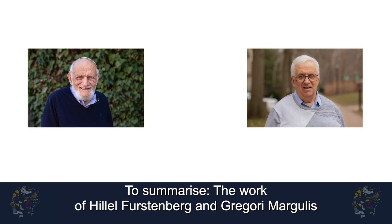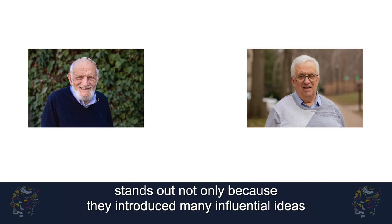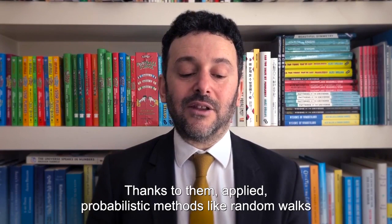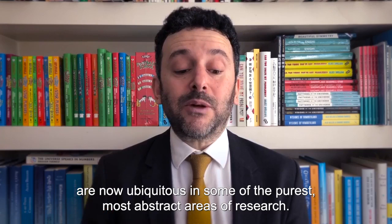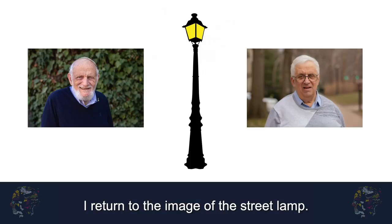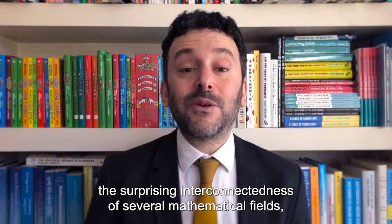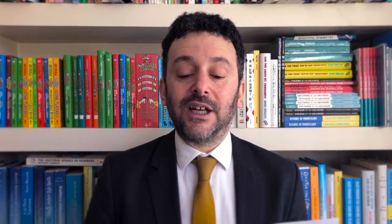To summarize, the work of Hillel Furstenberg and Grigory Margulis stands out not only because they introduced many influential ideas and proved long-standing open questions, but also because they brought different mathematical fields together. Thanks to them, probabilistic methods like random walks are now ubiquitous in some of the purest, most abstract areas of research. The work of the 2020 Abel Laureates illuminates brilliantly the surprising interconnectedness of several mathematical fields, and as such is a beautiful demonstration of mathematics as a unified whole.